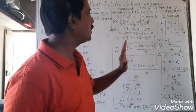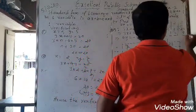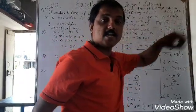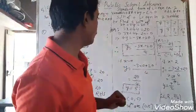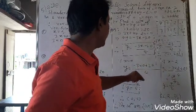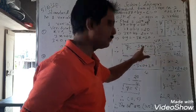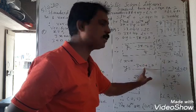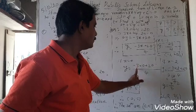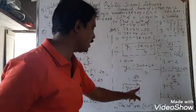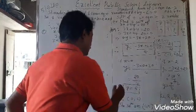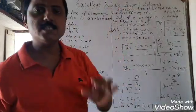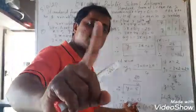After equating to y, go on taking different values of x and you will get the corresponding values of y. For example, if x is equal to 0, then y is equal to minus 3 into 0 plus 20 upon 4, which gives 20 by 4, so y is equal to 5. Thus for x is equal to 0, you got y is equal to 5. This pair, 0 comma 5, is called one solution of the equation.